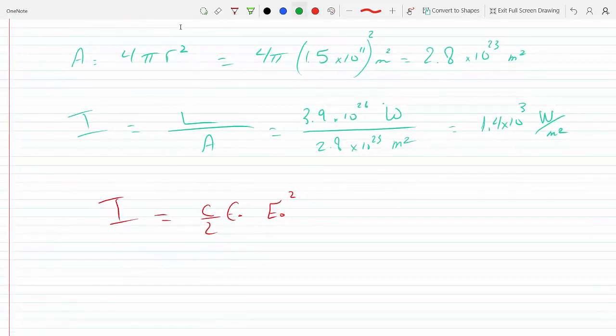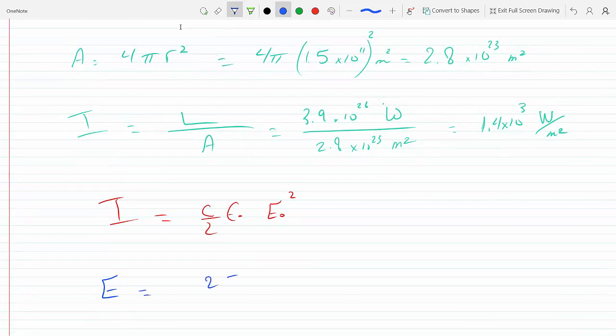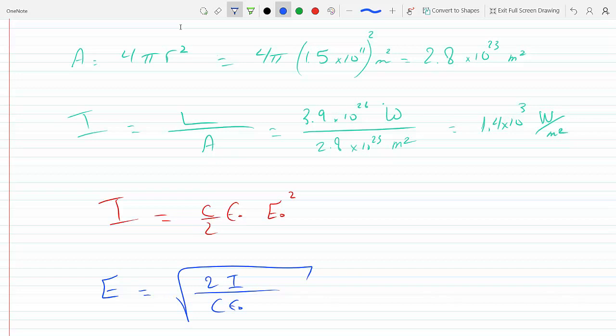So we could solve for the magnitude of the electric field. E will be equal to the square root of 2I over cε. So that's 2 times 1.4 times 10 to the 3, c is the speed of light so that's 3 times 10 to the 8, and ε is 8.85 times 10 to the minus 12. Square root that...